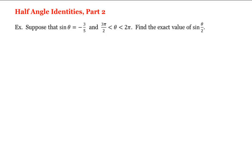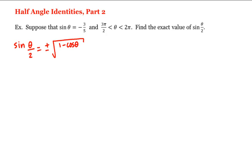Let's recall the half-angle identity for sine. We have that sine of theta over two is equal to plus or minus the square root of one minus cosine theta, all divided by two.